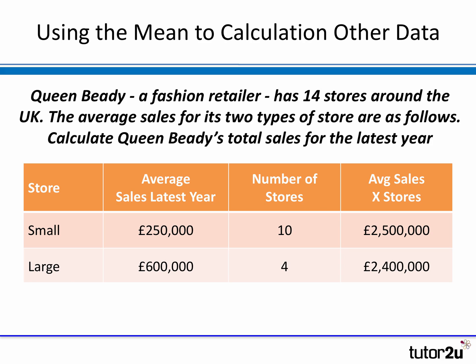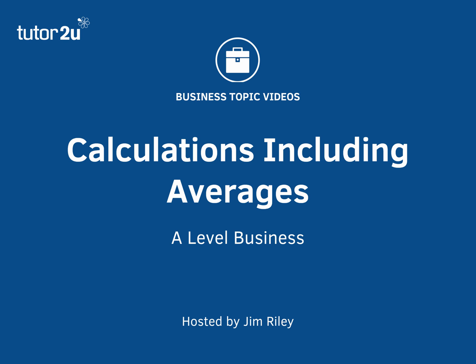So if we do that for the small stores, the total sales must have been £2.5 million. And for the large stores, four of them at an average of £600,000 must have been £2.4 million. Therefore, the total sales for the retailer as a whole — adding up all 14 stores — is £2.5 million plus £2.4 million, giving total sales of £4.9 million. So that's how you can use the average with other data to calculate other numbers. That's been a brief introduction to how to use calculations that include averages, in particular calculating the mean.